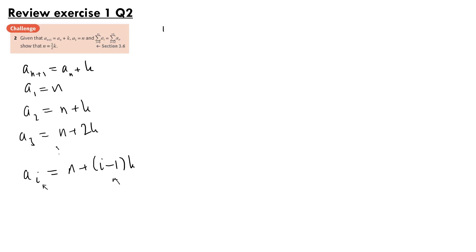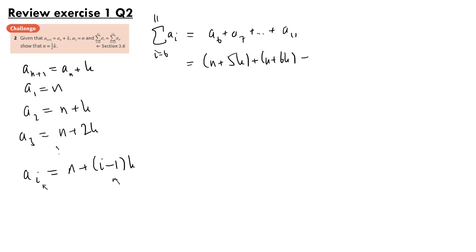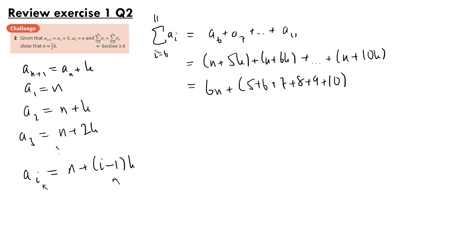Looking at the sum from i equals 6 to 11 of a(i), that equals a6 plus a7 plus ... plus a11. This equals (n plus 5k) plus (n plus 6k) plus ... plus (n plus 10k). We have 6 lots of n, plus (5 plus 6 plus 7 plus 8 plus 9 plus 10) lots of k. That sum is 45, so we get 6n plus 45k.